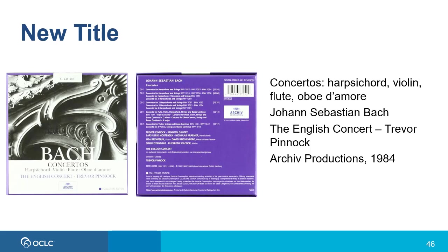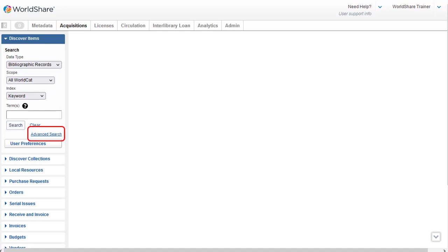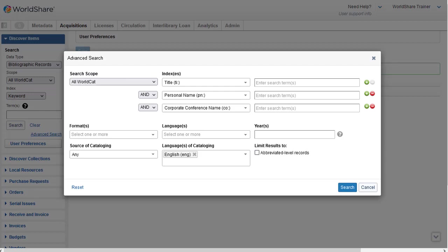So let's say I'm looking for a record for this CD set, the Bach Concertos. I have the CDs and the case, so I have a title, a personal name author — Bach — a corporate name author for the orchestra, the English Concert, and I have a publisher and a date. I'll click on Advanced Search, leave the scope set to All WorldCat, and use the title index to enter words from the title. The title keyword index, indicated by the index label TI colon, is a keyword index where you don't have to enter all of the words, and they don't have to be in order left to right, as a phrase search would be. A phrase search is indicated by the index label followed by an equal sign.